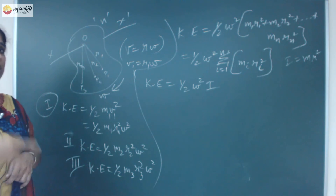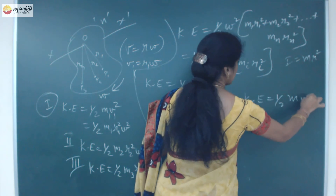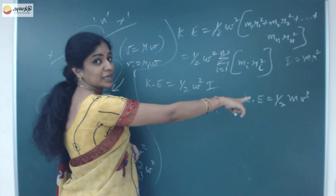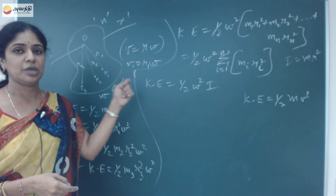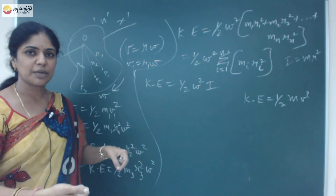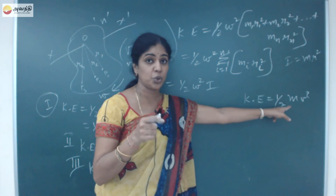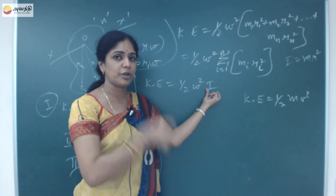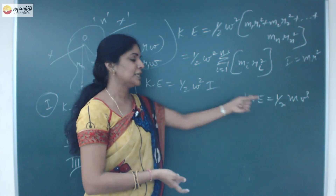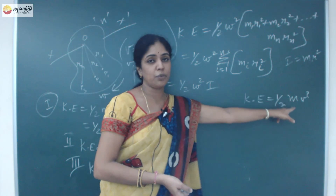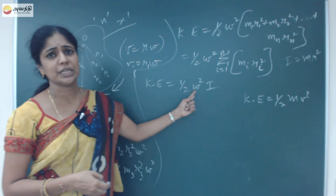To compare with translatory motion: in translatory motion, kinetic energy is half m v squared. Mass in translatory motion determines the inertia of an object — if mass is small, inertia is small. In rotational motion, the moment of inertia plays the role of mass and is given by the product of mass and the square of distance. So v is the linear velocity and omega is the angular velocity.